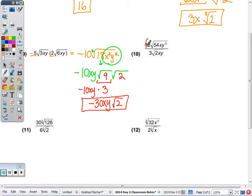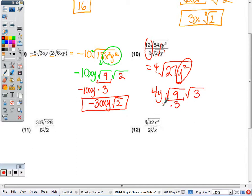10. 12 divided by 3 is 4. 54 divided by 2 is 27. The x's can cancel. y3 minus the 1 is y squared. It is a perfect square, so square root would be 4y, and 27 breaks down into 9 times 3. Square root of 9 is 3. Times that 4y is 12y radical 3, or square root of 3.